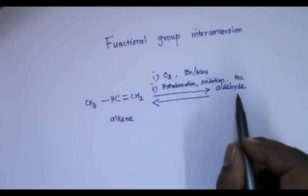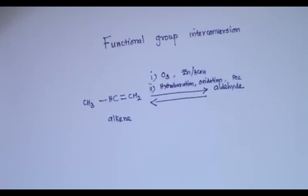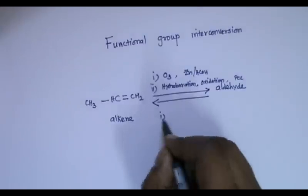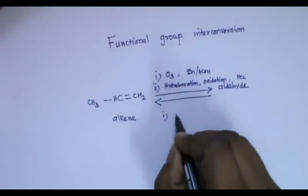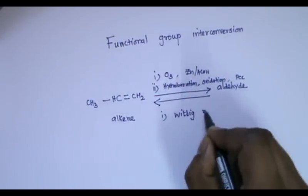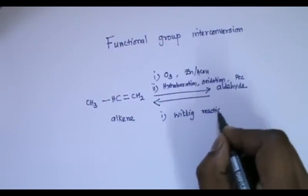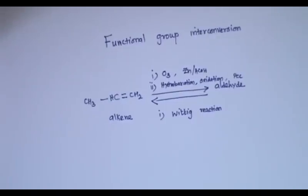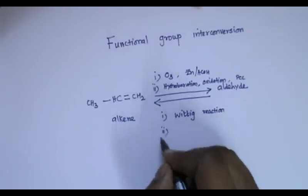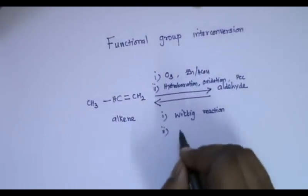Similarly, how can I convert this aldehyde into alkene? The most common method is Wittig reaction. Take aldehyde, react with Wittig salt, you will get alkene. Instead of that, I can reduce aldehyde to alcohol.